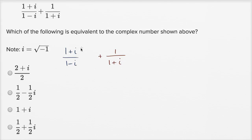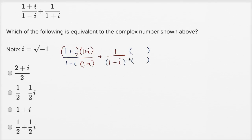So let's do that. Let's multiply the numerator and denominator of the first fraction by (1+i). And let's multiply the second fraction by (1-i)/(1-i). Notice that (1+i)/(1+i) is just one, so we aren't changing its value. Similarly, (1-i)/(1-i) is just one, so we're not changing the value — we're just finding a good way to rewrite it so that we'll have the same denominator.